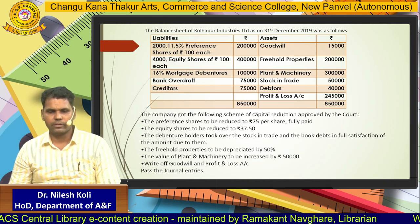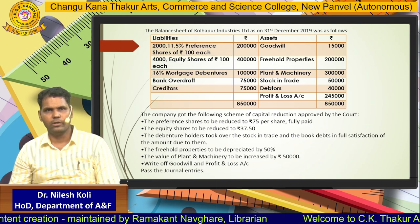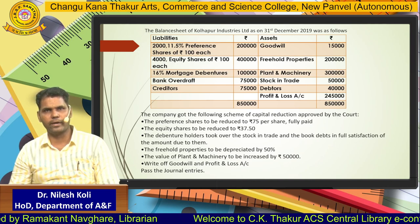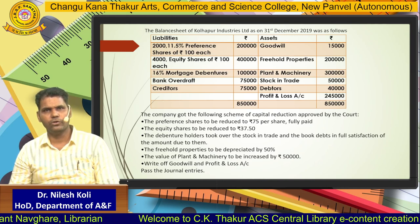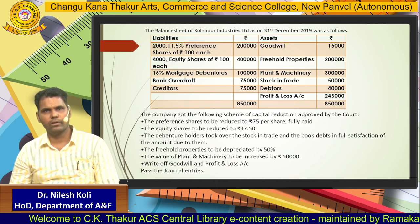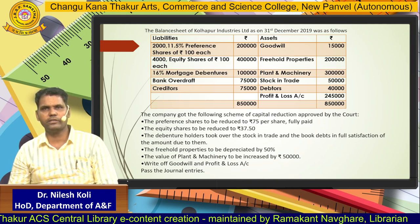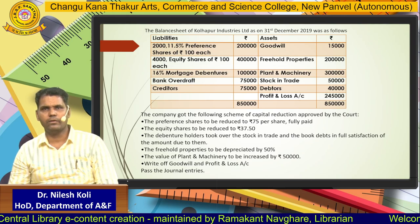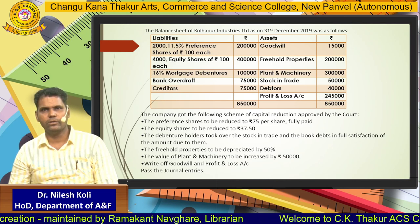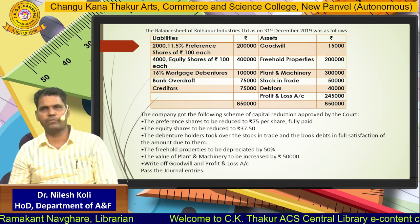The problem is here: the balance sheet of Kolhapur Industry Limited as on 31st December 2019 was as follows. Liability side: 2000 11.5% preference shares of ₹100 = ₹2 lakh; 4000 equity shares of ₹100 = ₹4 lakh; 16% mortgage debenture ₹1 lakh; bank overdraft ₹75,000 and creditors ₹75,000. Total liabilities ₹8,50,000. Assets: goodwill ₹15,000; real property ₹2 lakh; plant and machinery ₹3 lakh; stock in trade ₹50,000; debtors ₹40,000 and profit & loss account ₹2,45,000. Total assets ₹8,50,000.